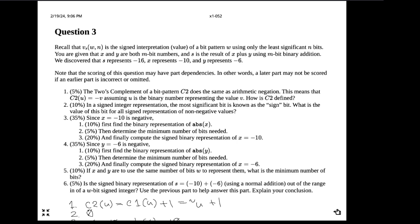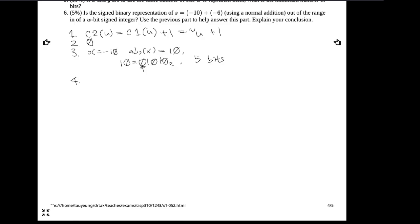Now we compute C2 of 01010 base 2: we take the bitwise NOT of 01010 base 2 plus 1, which gives 10101 base 2 plus 1, which is then 10110 base 2.